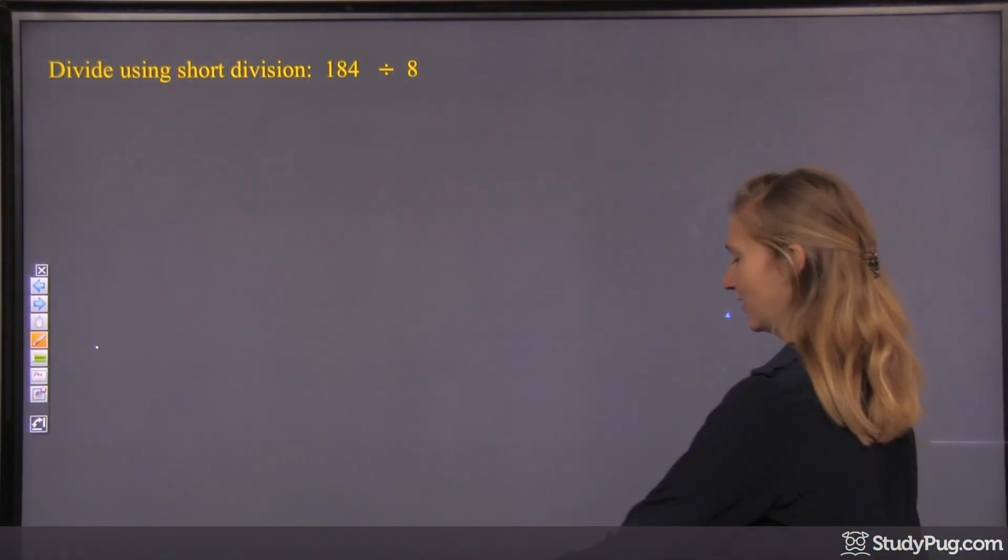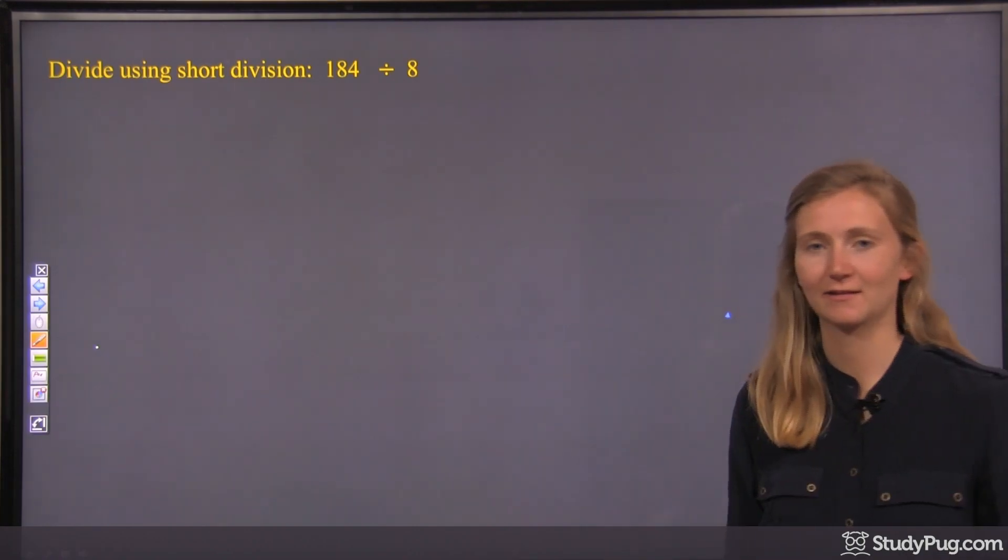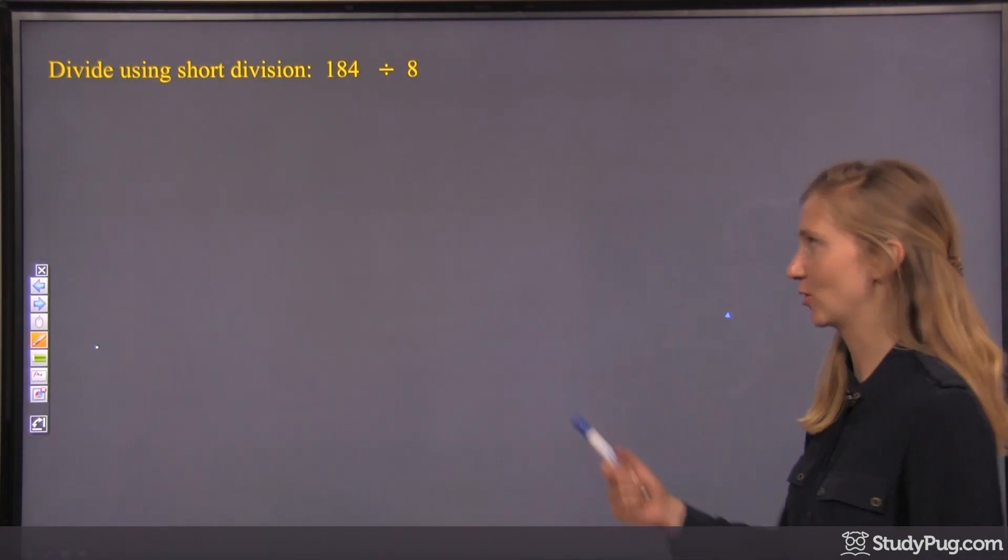Divide using short division, 184 divided by 8. Okay, first of all, what is short division?